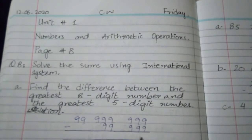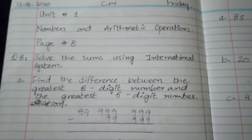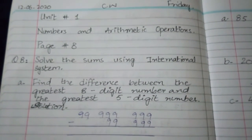In this case, you have to write the biggest 8-digit number. They have asked about the difference. When you ask for the difference, then there is a subtraction.